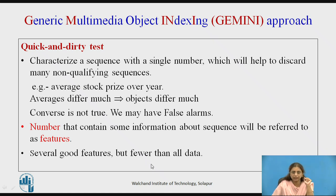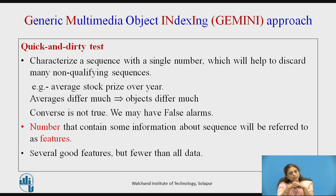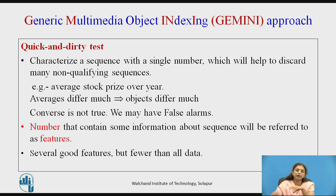A false alarm occurs when averages are close but actual values differ, or when averages differ but the sequences are actually similar. The quick and dirty test involves representing data in a few numbers; the number that contains information about the data is called a feature. Several good features can be selected, and that number of features should be less than the original data size.